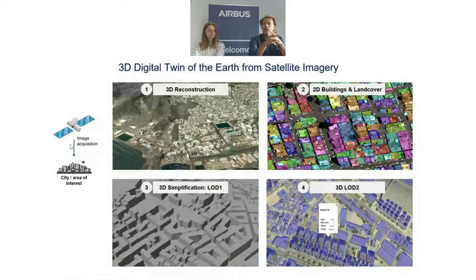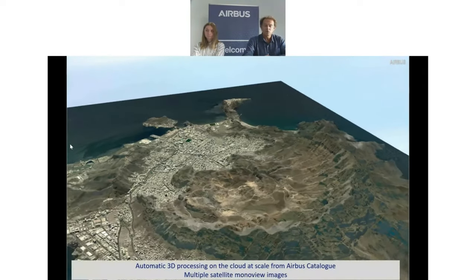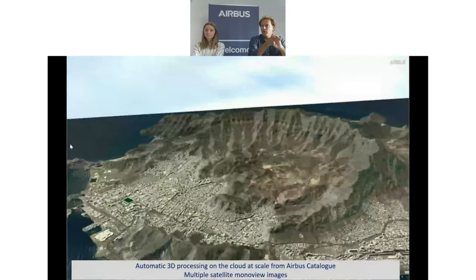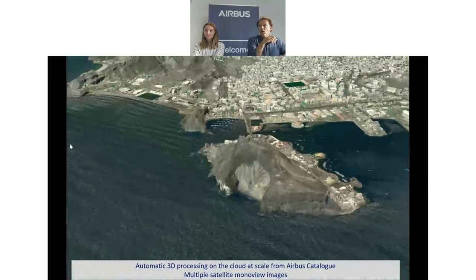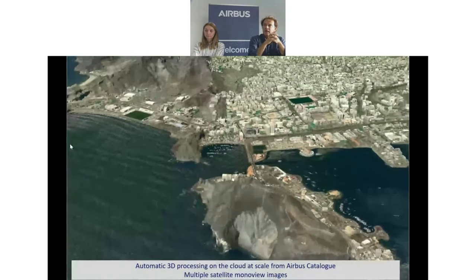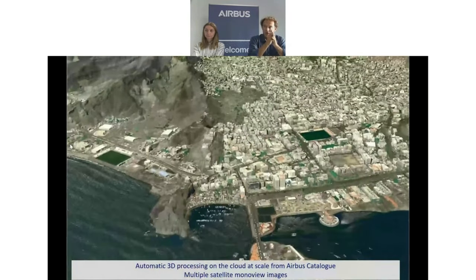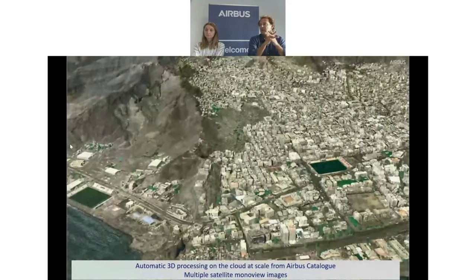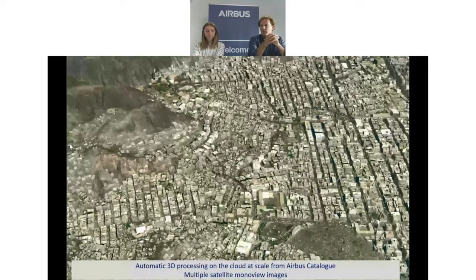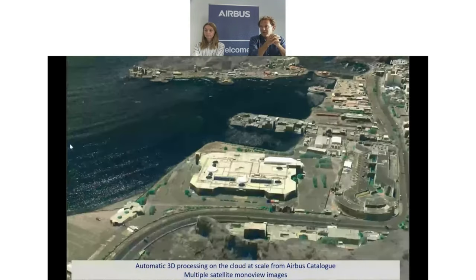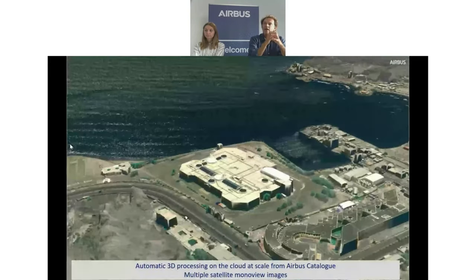For running a simulation, we have to prepare the data to be ingested by the simulation engine. We start by processing a 3D digital model — as introduced by Vanessa. We have an example of a 3D digital model produced over the city of Aden in the Middle East. The result is very sharp. One important point: this is fully automatically produced from nine Pléiades New Generation images, which is why we have been able to texture the walls of the buildings.